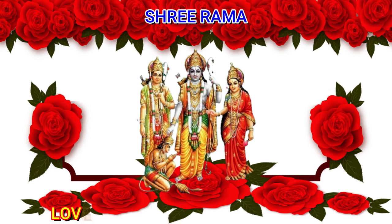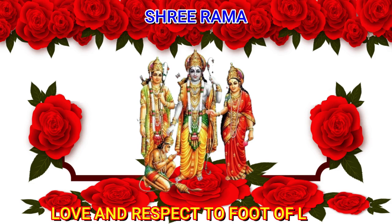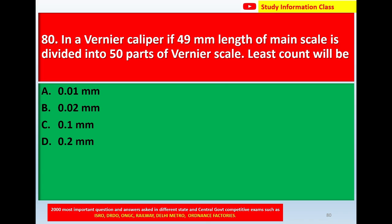Namaste, Sri Rama. Question number 80: In a Vernier caliper, if 49 mm length of main scale is divided into 50 parts of Vernier scale, then least count will be — option A: 0.01 mm, option B: 0.02 mm, option C: 0.1 mm, option D: 0.2 mm.